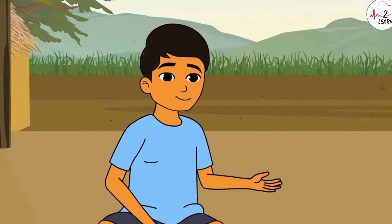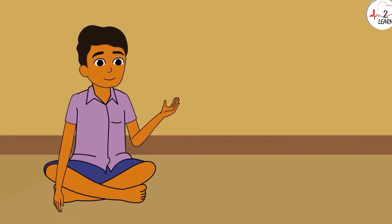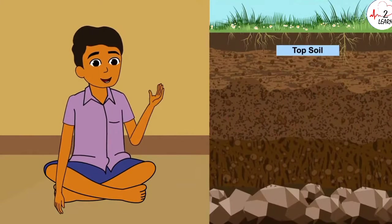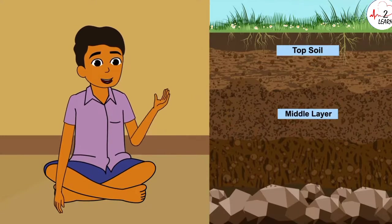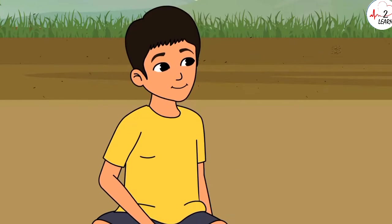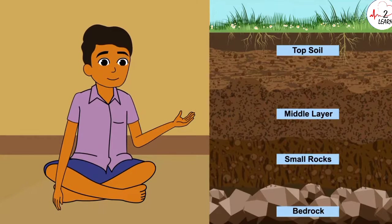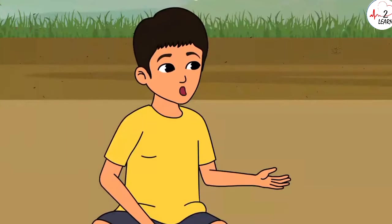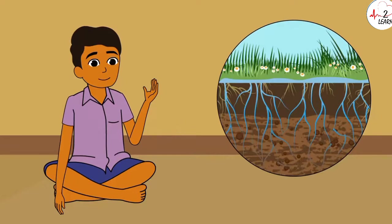Is the soil profile under the earth like this? Yes, your guess is right. There are distinct layers of soil in the earth. The topmost layer is called topsoil — this has humus, and plants grow on this. The next layer below is called the middle layer — it has minerals. Then there are small rocks in the next layer, and the last layer is bedrock. The topmost layer contains water, and sand and gravel at the bottom help the water to drain so that the roots do not rot.